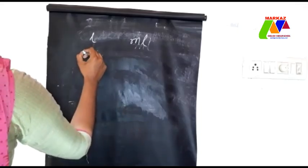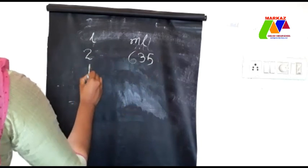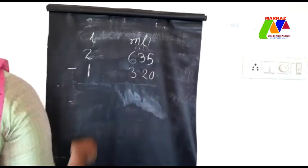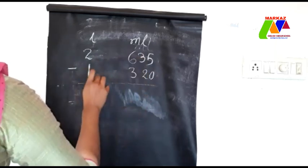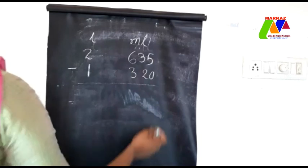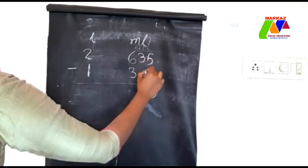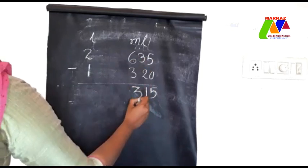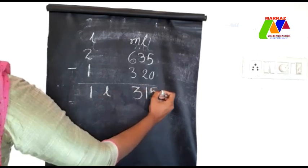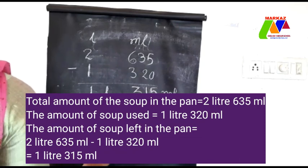Let us find the amount of soup left. We subtract 1 litre 320 milliliter from 2 litre 635 milliliter. 5 minus 0 is 5, 3 minus 2 is 1, 6 minus 3 is 3, 2 minus 1 is 1. So the amount of soup left is 1 litre 315 milliliter. Exercise number 3.13 sections A and B will be your homework.